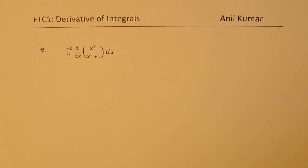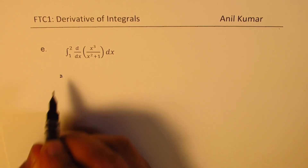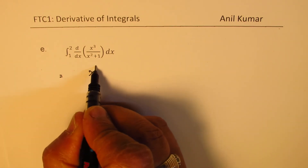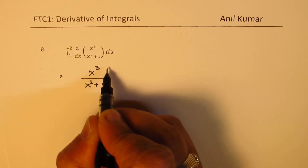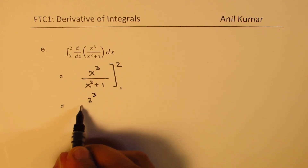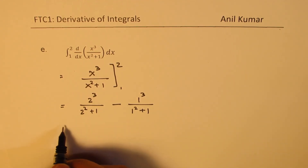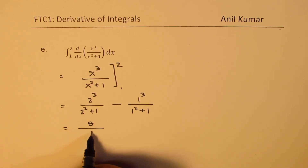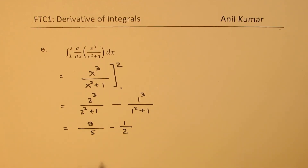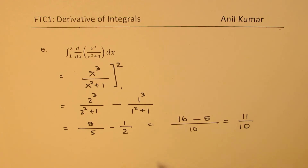In the last example, we first find the derivative and then take the integral, which is the reverse order. From the Fundamental Theorem, we get the antiderivative x³ over (x² + 1), and apply the limits from 1 to 2. Evaluating: 2³ over (2² + 1) minus 1³ over (1² + 1) equals 8 over 5 minus 1 over 2. Taking the common denominator of 10, we get 16 over 10 minus 5 over 10, which equals 11 over 10.